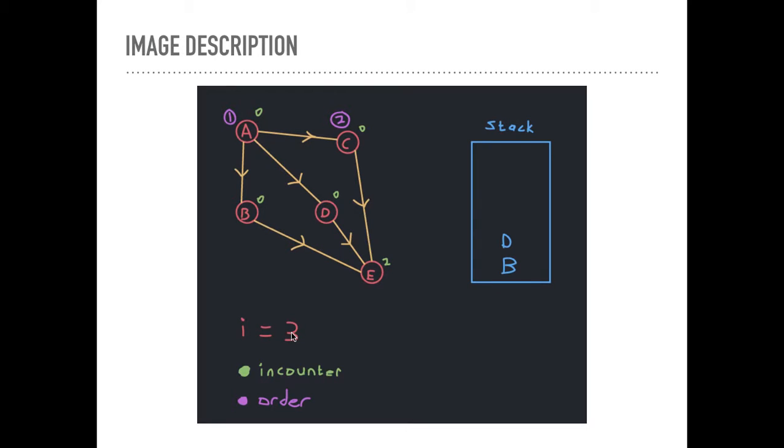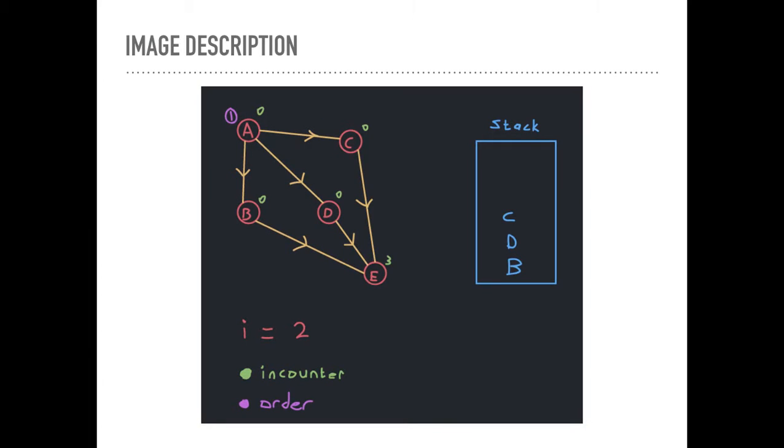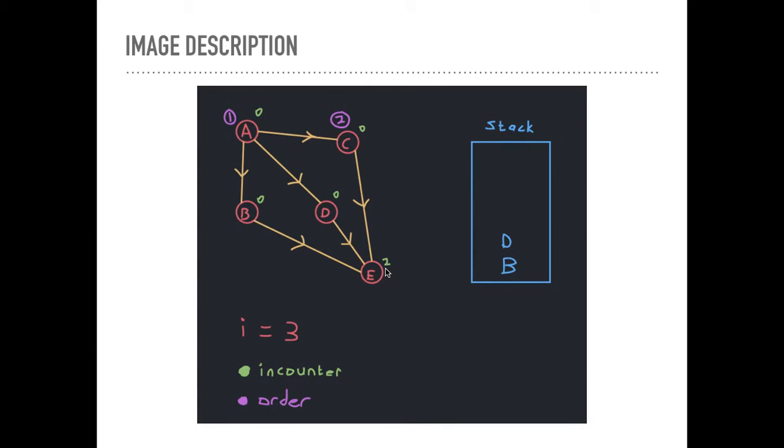And then we say for each edge E outgoing from C. That's this edge. W is the opposite vertex. And we're going to subtract 1 from the inCounter of that vertex. It was 3. Now it's 2. We've subtracted 1.